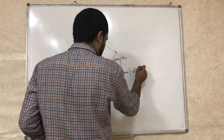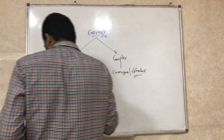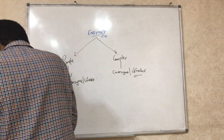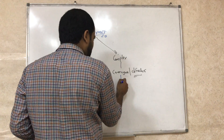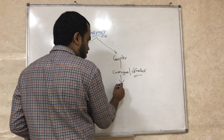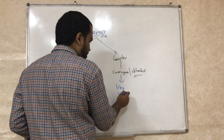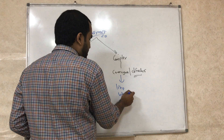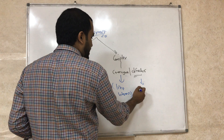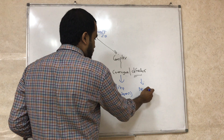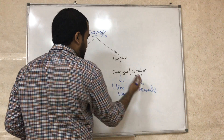Before looking at examples, let's clarify: a coenzyme is organic in nature, like a vitamin. A cofactor is inorganic, like minerals.